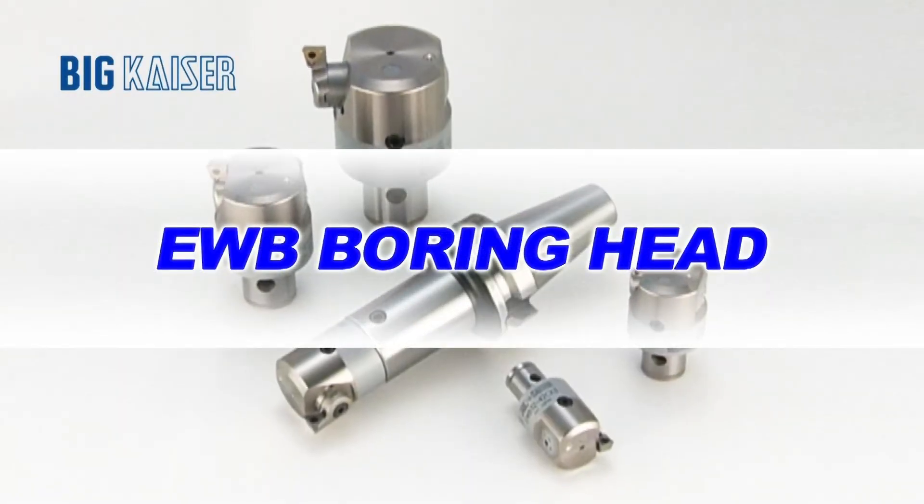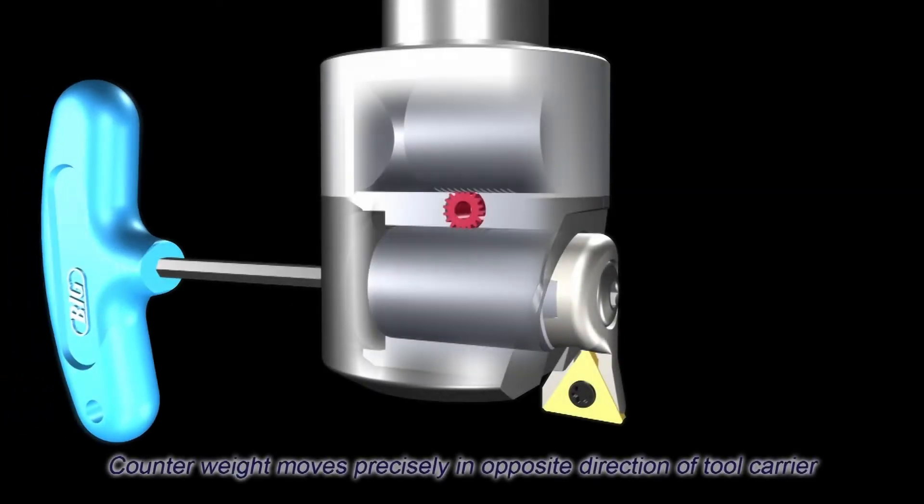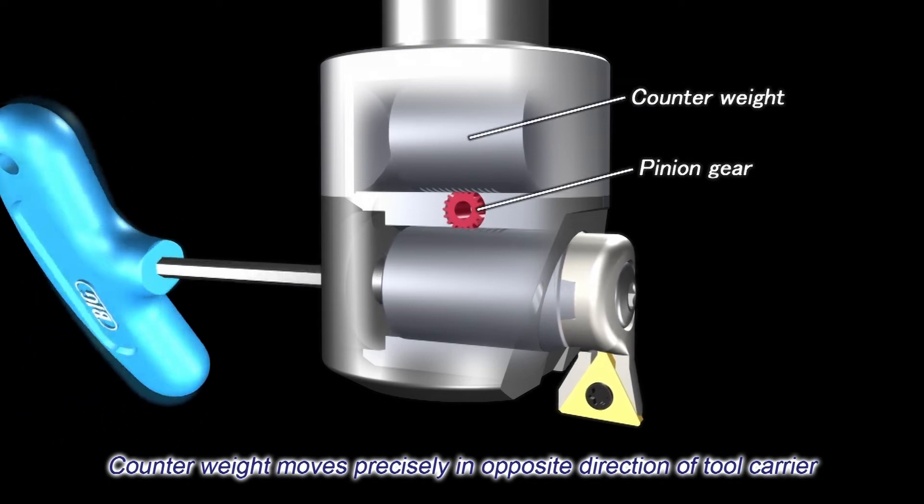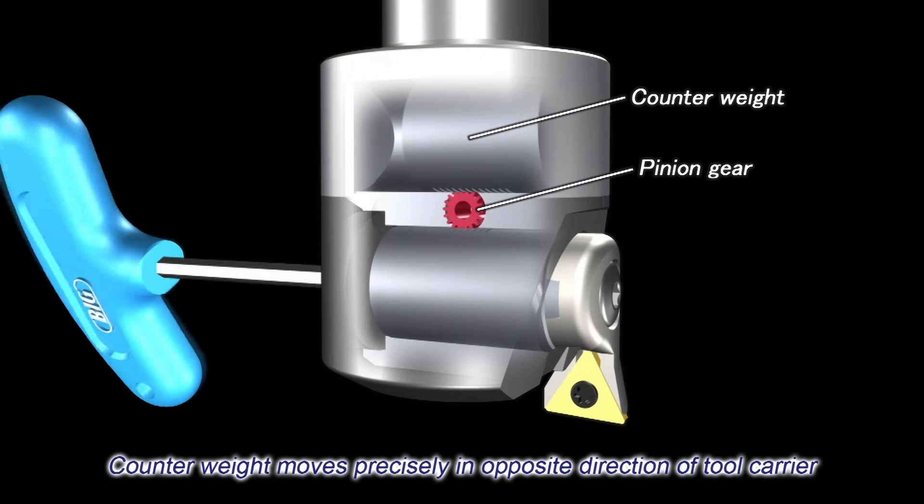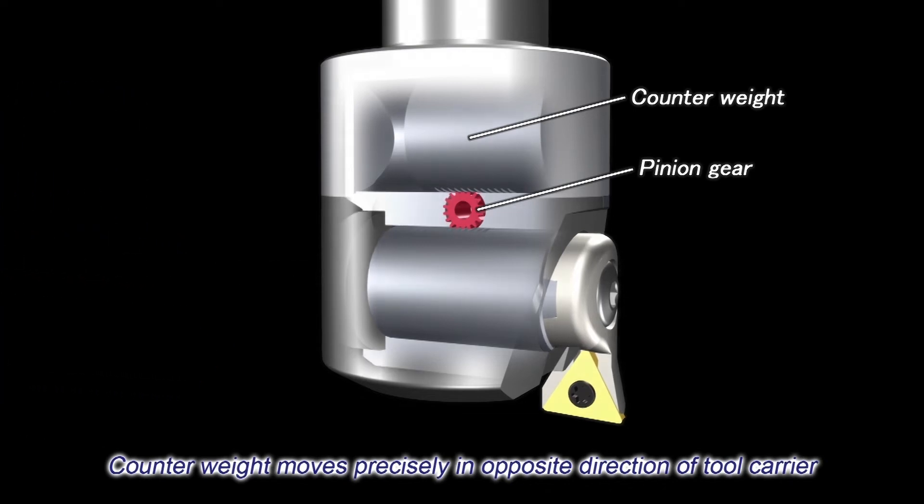The EWN series boring heads add tool balance compensation to maximize cutting speeds and increase performance in deep hole applications. For the boring range of 32 to 105 millimeters, the internal counterweight automatically corrects for the insert holder unbalance as the diameter is adjusted.